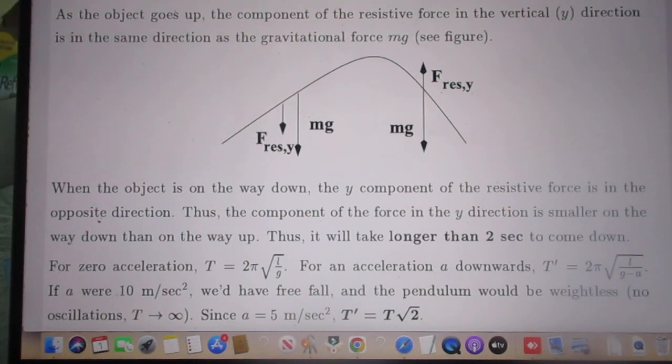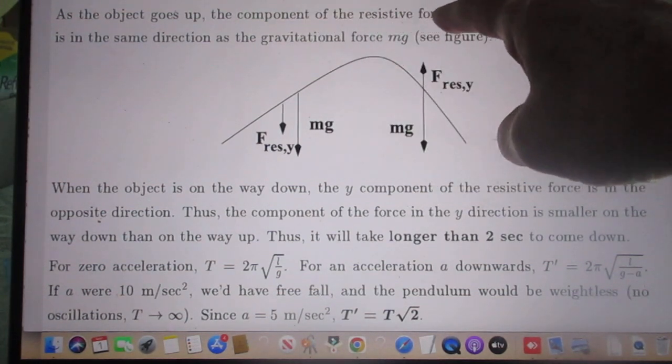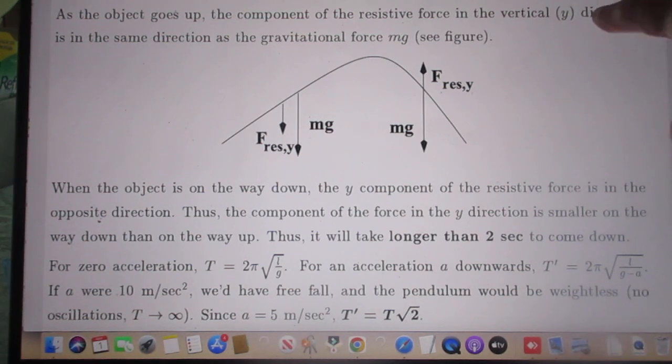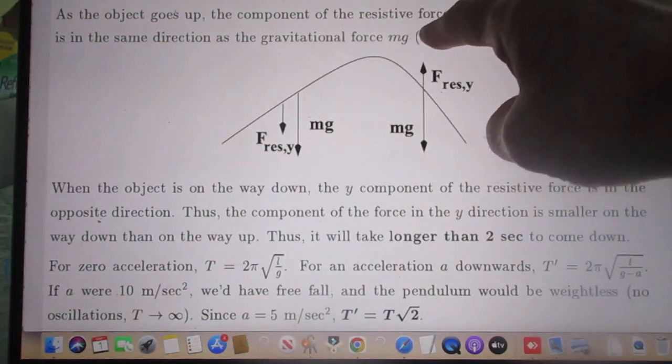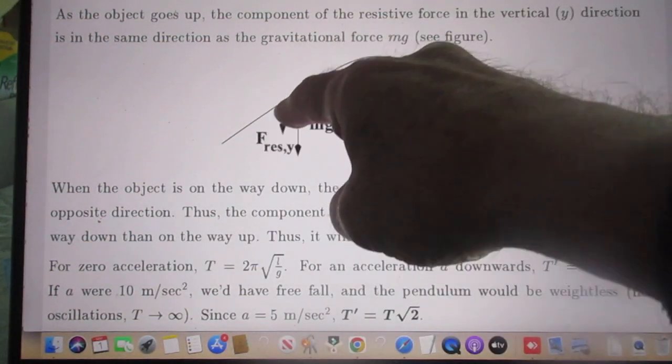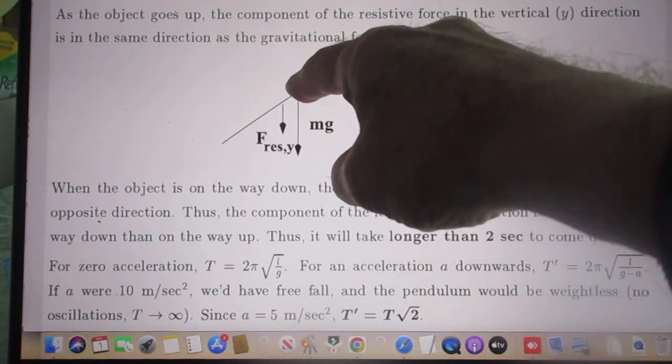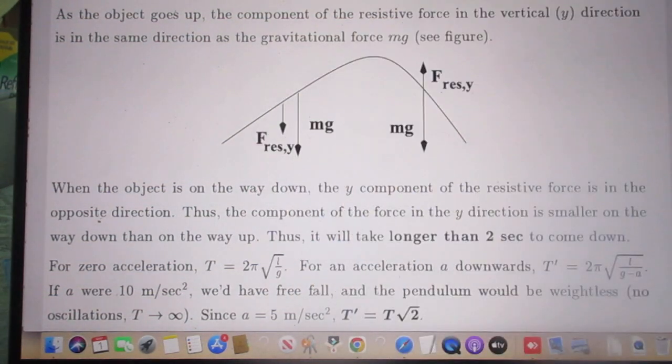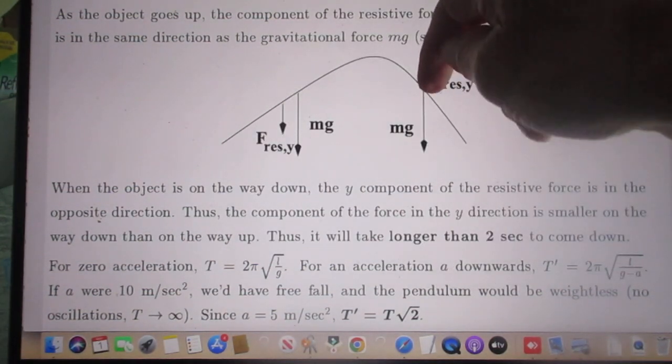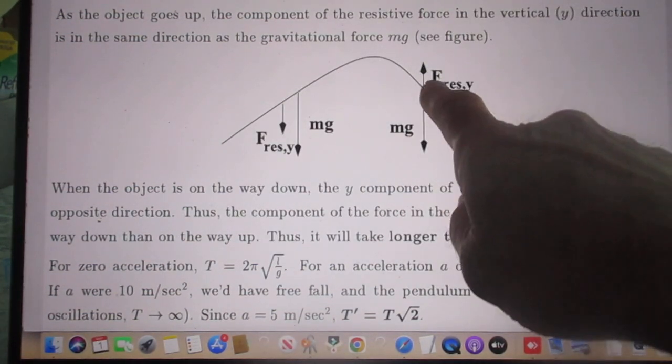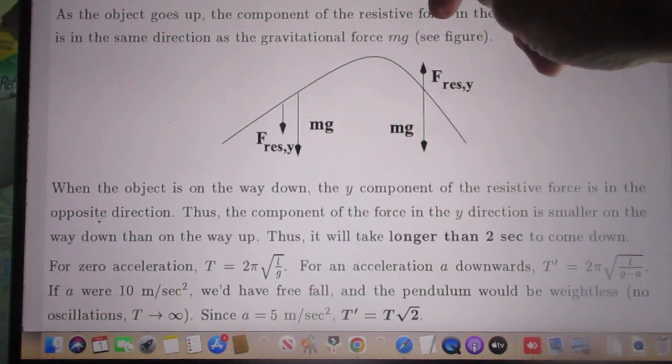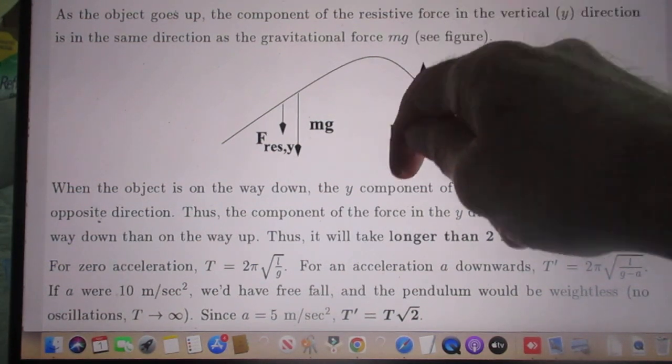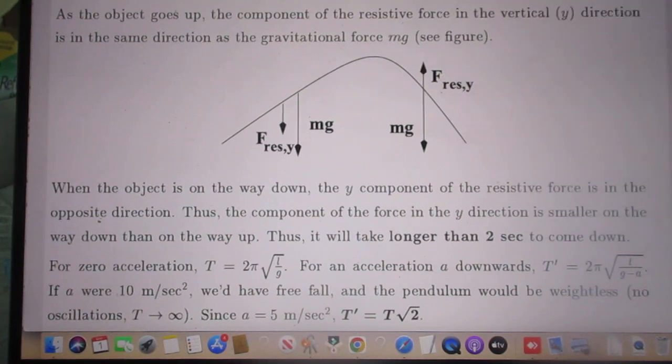And the reason is very simple. I want you to read this with me. As the object goes up, the component of the resistive force in the vertical direction is the same direction as the gravitational force mg. See the figure. So here, the resistive force and the gravitational force are both down. Here, the gravitational force is down, but the resistive force is up. In other words, the net force here in down direction is smaller than the net force there, and thus it takes longer.